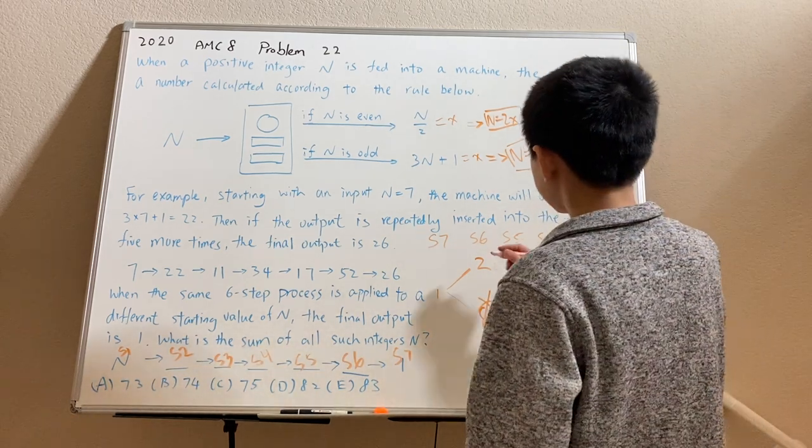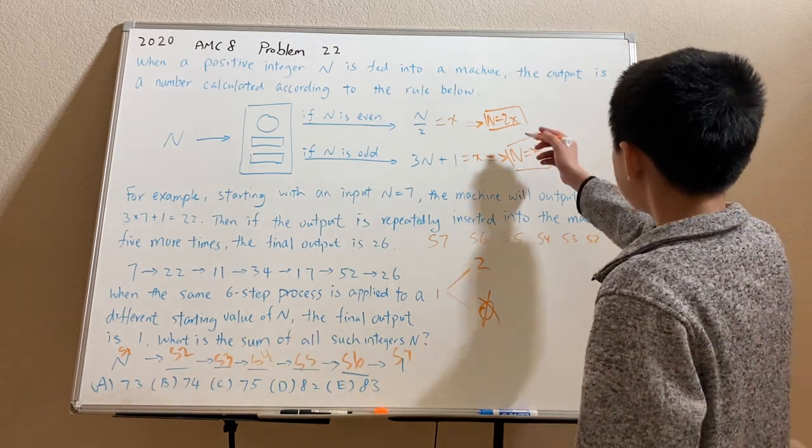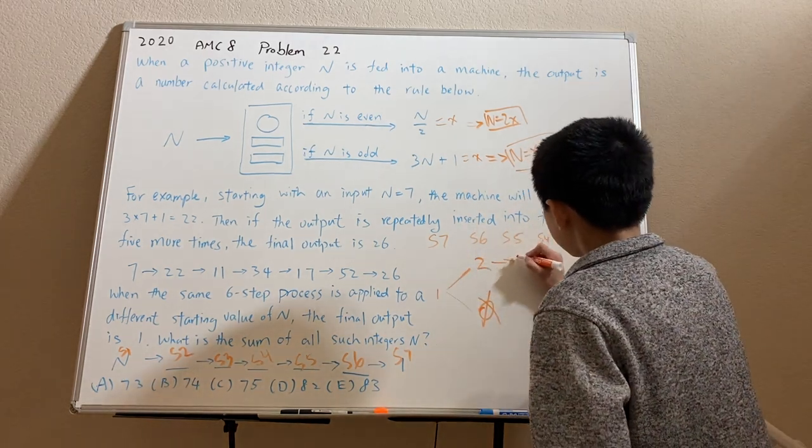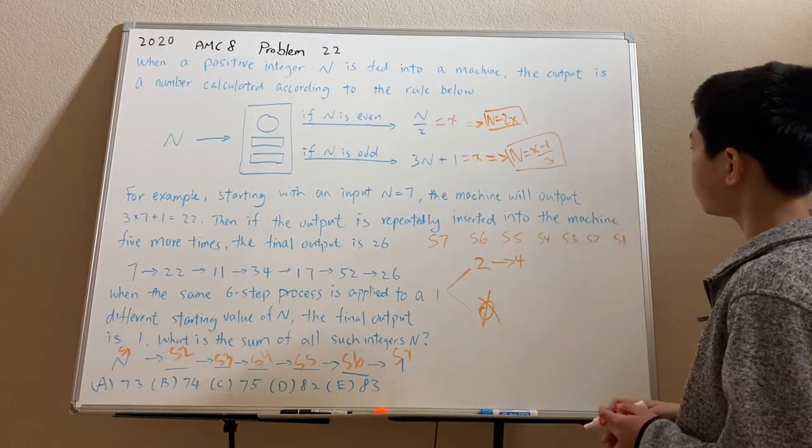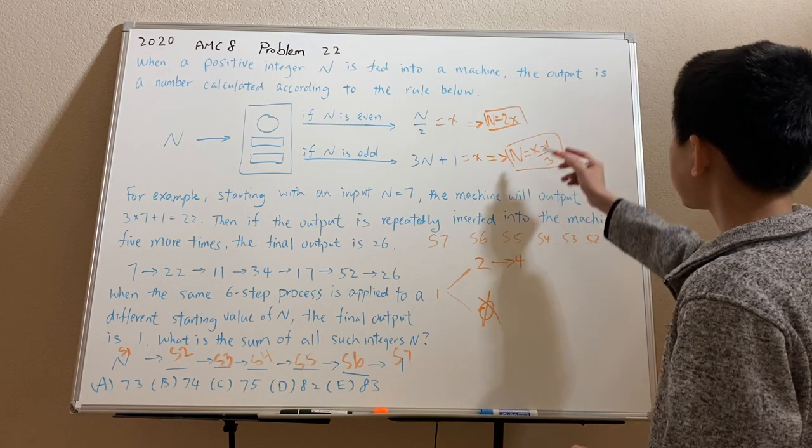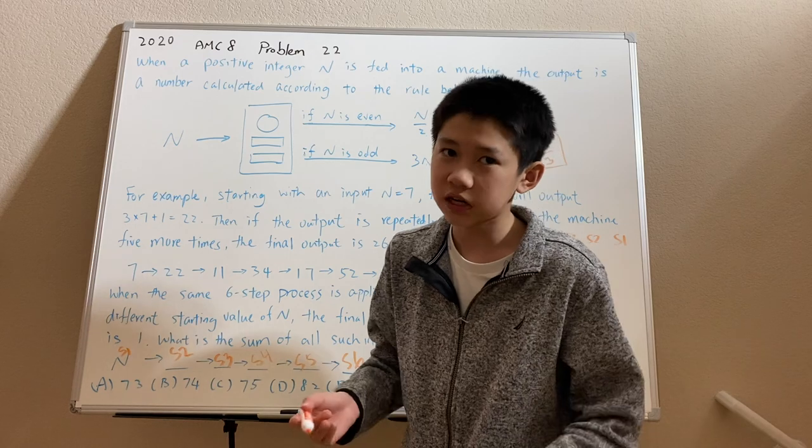Now for stage 5, we can do something similar. It turns out that the only case that works is n equals 2 times 2, which is 4. Since if we plug in x equals 2 to the n is odd case, it comes out 1/3, which is not an integer.